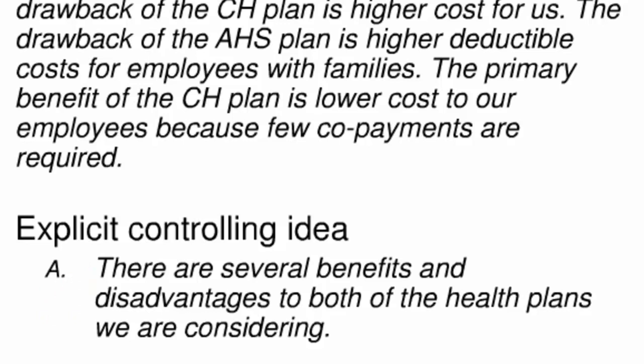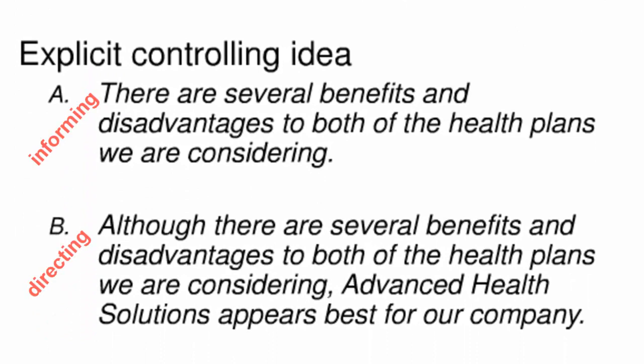I've discussed something similar in the chapters on bottom line placement and persuasive prose development. Note that including the explicit controlling idea makes the message more effective — it clarifies that the writer's purpose in this paragraph is to inform the business partner. The same content with the second controlling idea, shown in B, suggests the writer's purpose is to direct rather than simply inform, and that would probably be inappropriate in this situation. The point is that the writer can only be sure the reader gets the intended point in each paragraph by making the controlling ideas explicit.